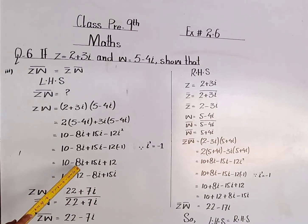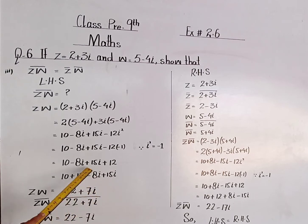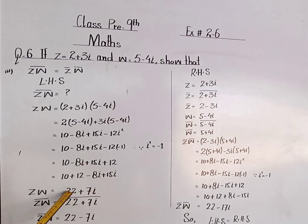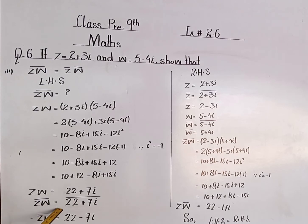Now separate real and imaginary parts. Real numbers are 10 plus 12, and imaginary numbers are minus 8 iota plus 15 iota — imaginary numbers are those numbers where there is an iota. So 10 plus 12 is 22, and minus 8 iota plus 15 iota gives plus 7 iota. Now find the conjugate: conjugate of z into w is equal to conjugate of 22 plus 7 iota.